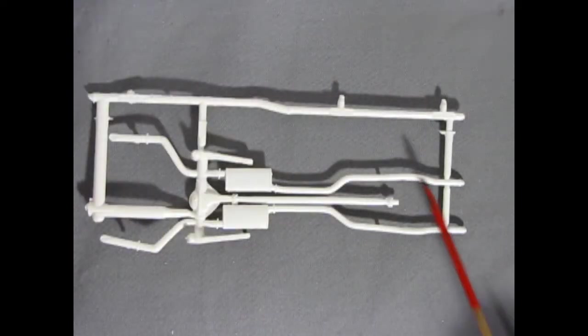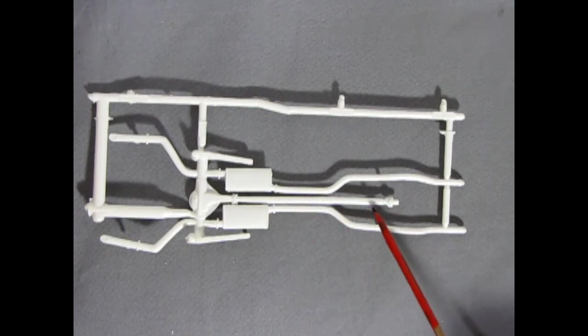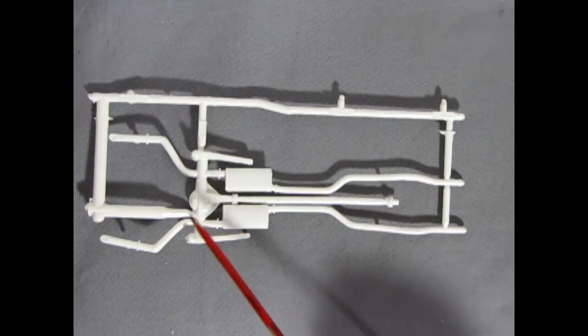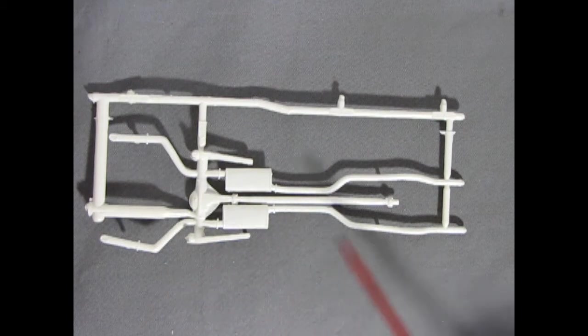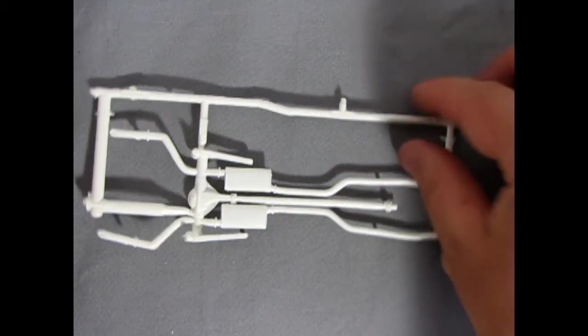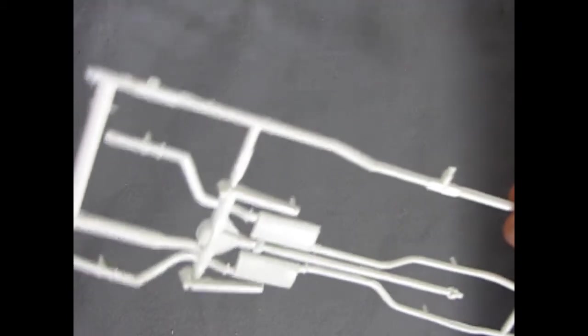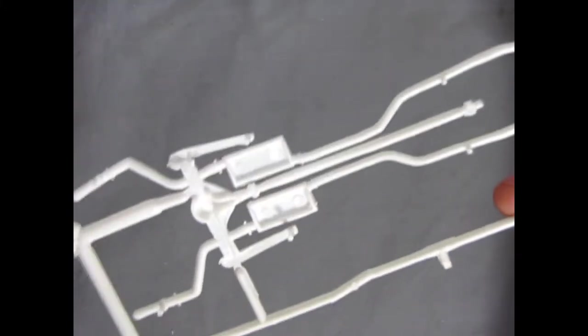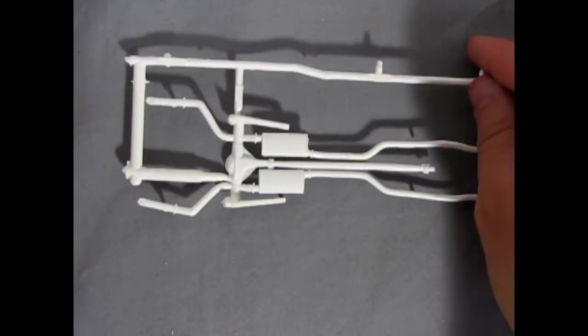Here we have our exhaust pipes, mufflers, drive shaft, differential, and rear suspension components all molded as one solid piece. And the detail on here is not really that deep although this will give your car the actual look of a real car from underneath.